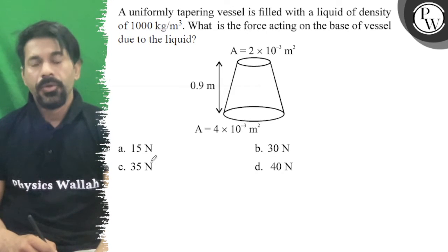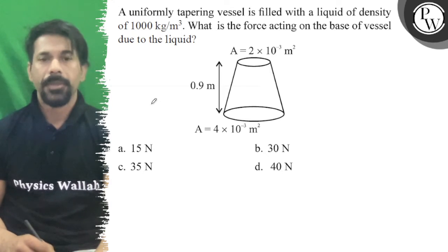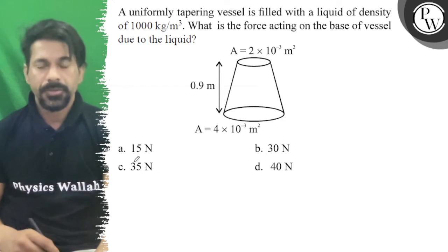Hello, let's see the question. A uniformly tapering vessel is filled with a liquid of density 1000 kg per meter cubed. What is the force acting on the base of the vessel due to the liquid?